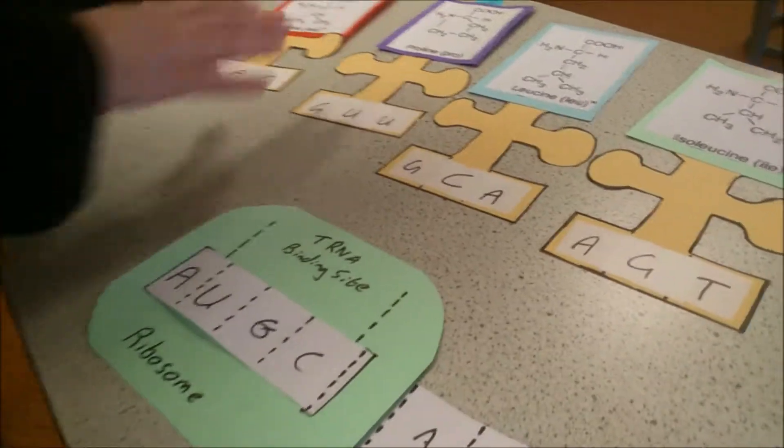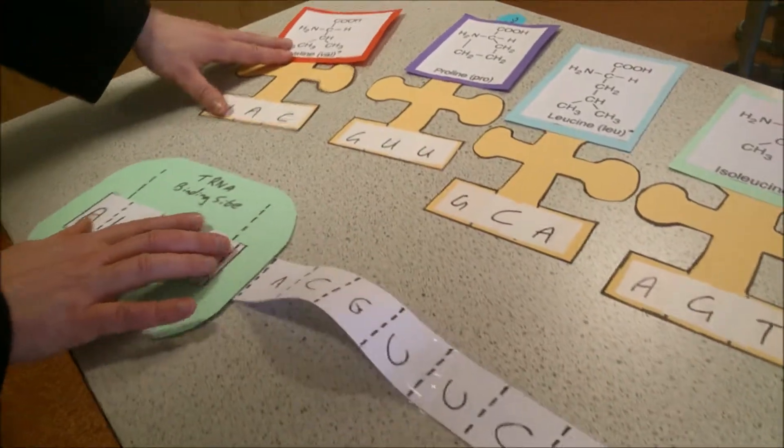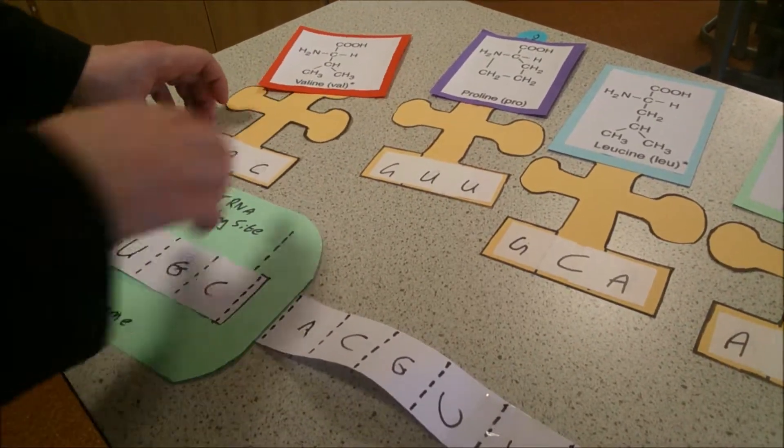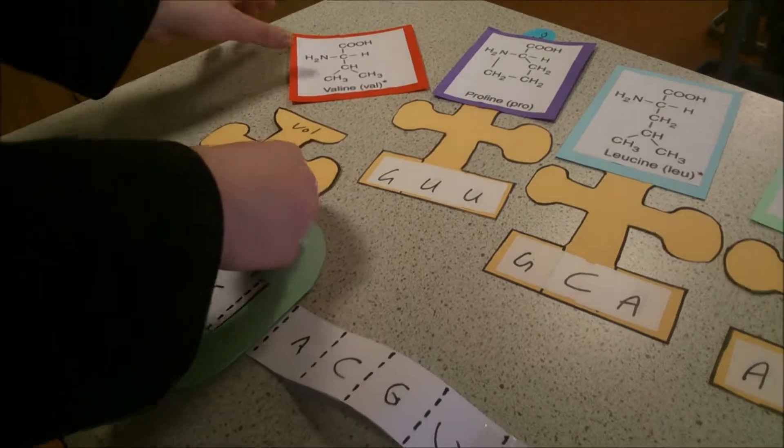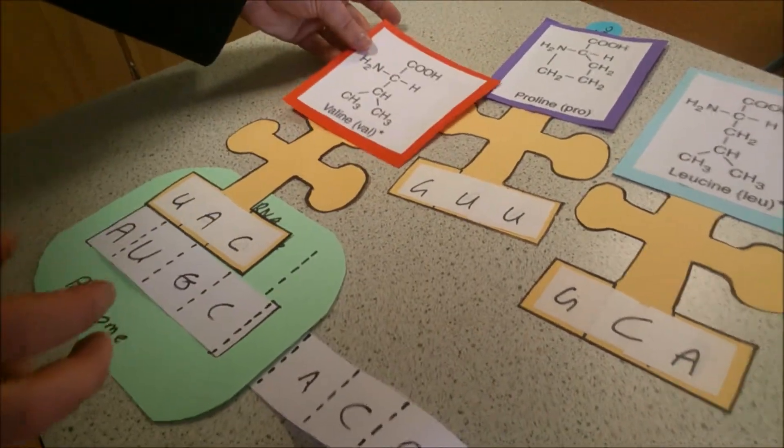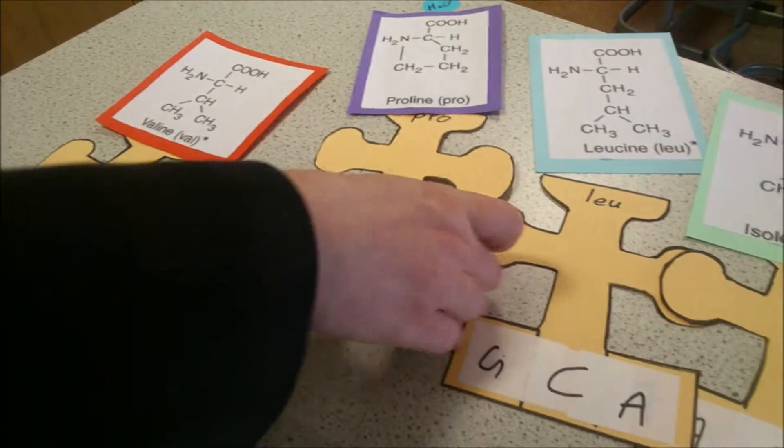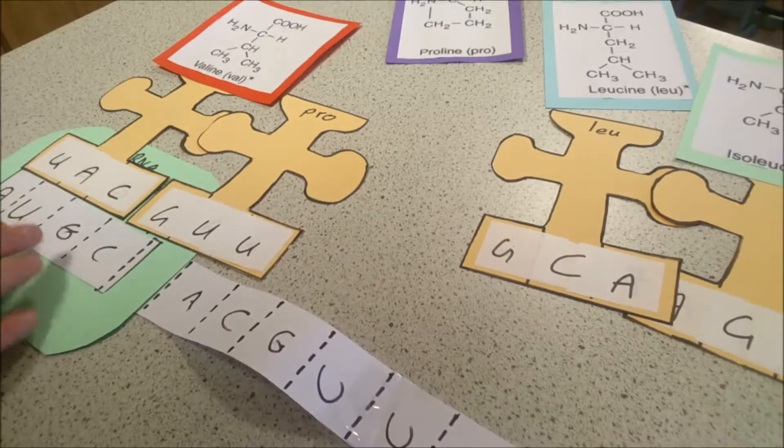Once it's in that, transfer RNA with complementary codons go and bind to the codons on the messenger RNA and bring the amino acids that are going to form our protein.